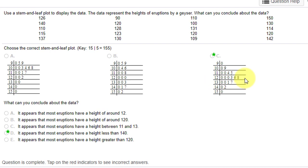120 stem. Let's look at these options. It appears that most eruptions have a height around 12. Well, students trip up on that because they see 12 and this column with a lot of entries, but remember that's really 120, not 12, so that's not correct. The next one correctly says 120, but it's wrong because there's just